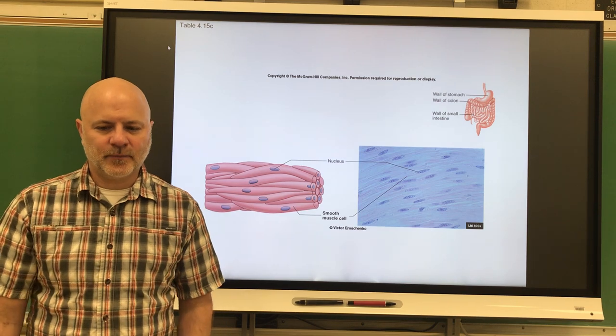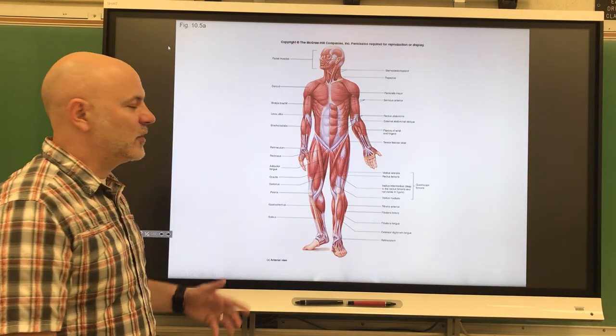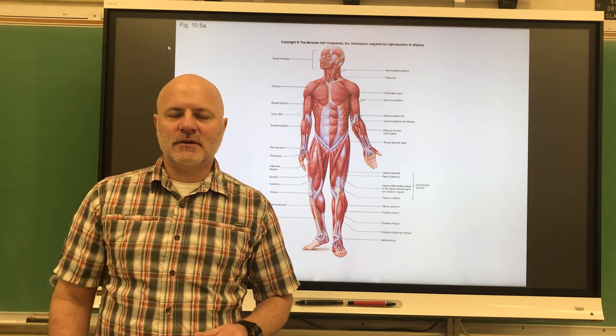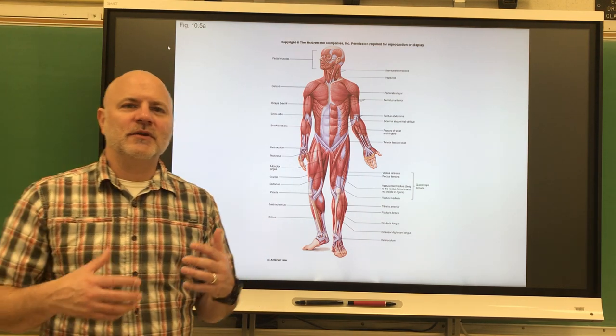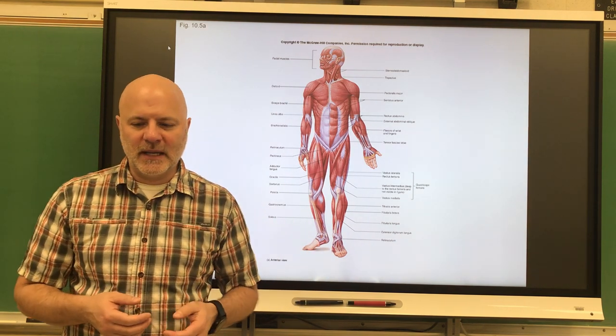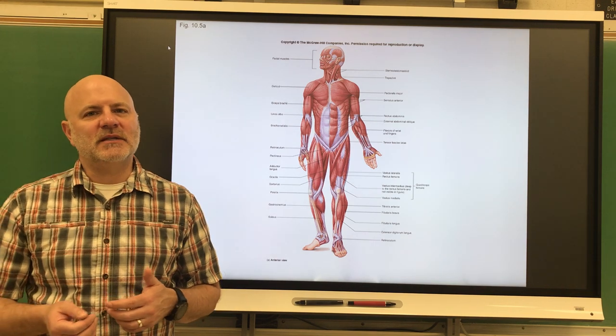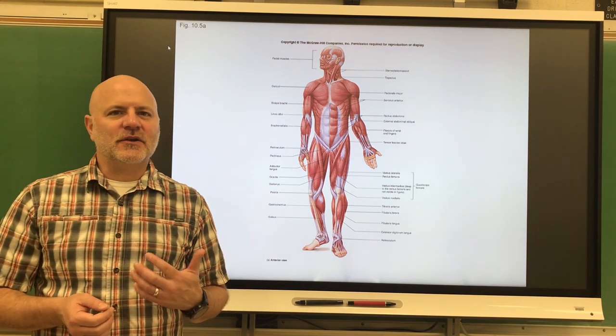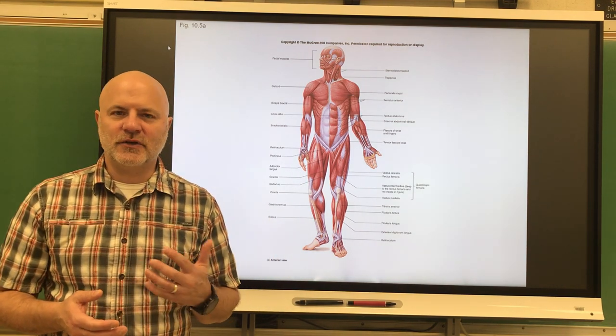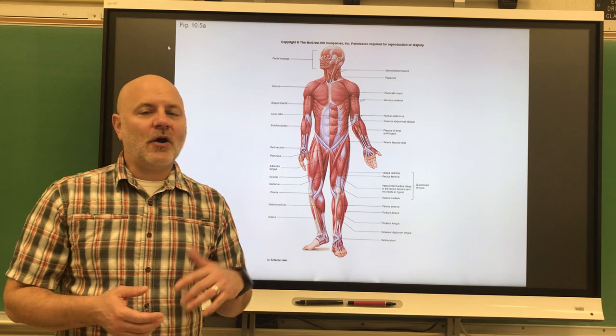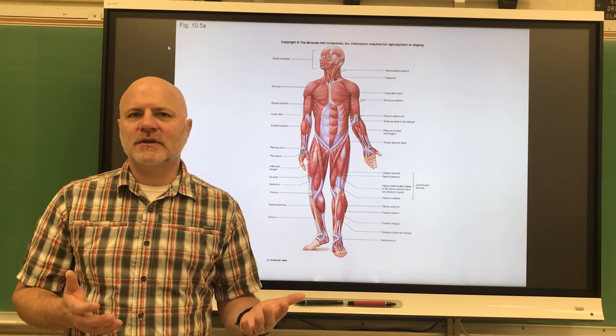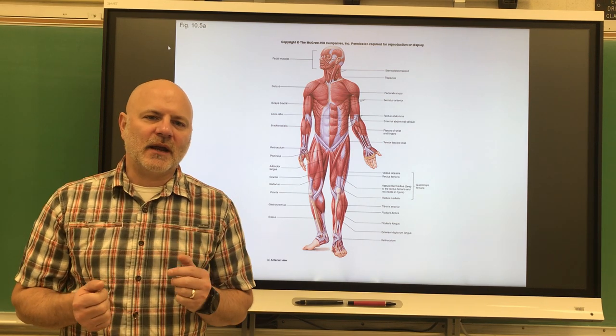Smooth muscle can contract on its own by being stretched or it can contract by nerve activity. Let's look at the functions of muscles. Muscle contractions produce heat. Start exercising, you're contracting those muscles more, you're going to generate more body heat. This is going to help us maintain our body temperature. Muscle contractions also produce movement. Skeletal muscles produce body movements, also used in breathing. Cardiac muscle moves blood, and smooth muscle moves substances most of the time.